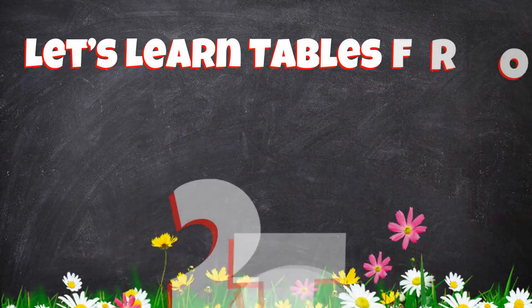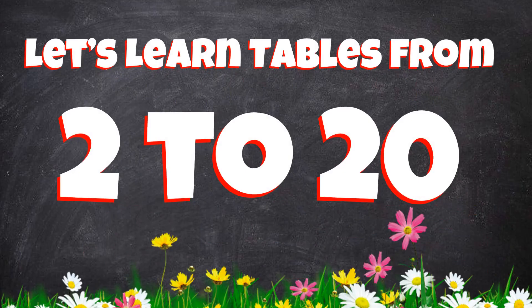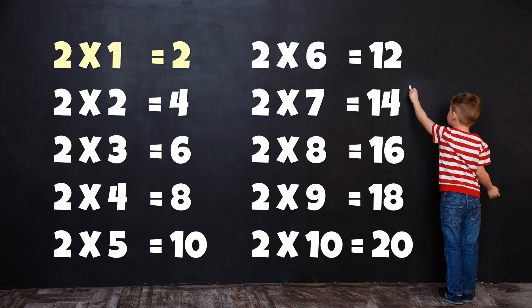Let's learn tables from 2 to 20. Table of 2: 2×1=2, 2×2=4, 2×3=6, 2×4=8, 2×5=10, 2×6=12, 2×7=14, 2×8=16, 2×9=18, 2×10=20.